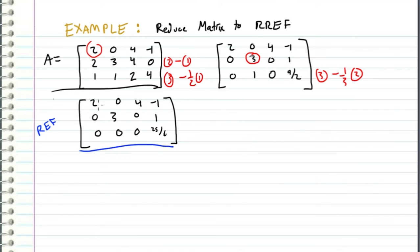So we begin, let's take each row and divide by its pivot value. So in this row, we'll take row 2 and divide by 3, and we'll take row 3 and we'll multiply by 6 over 25.